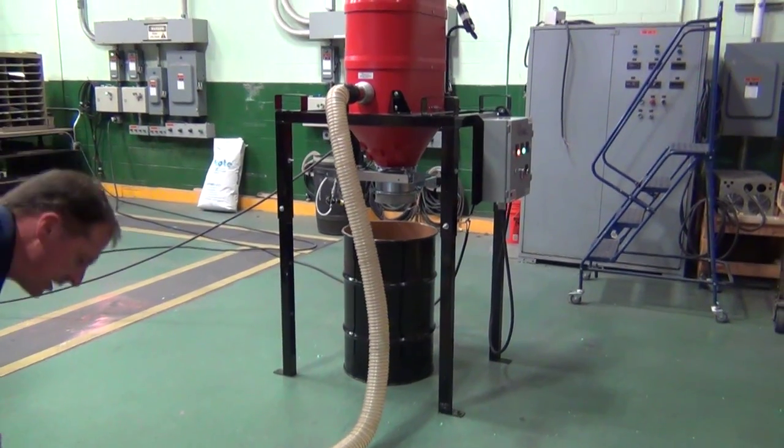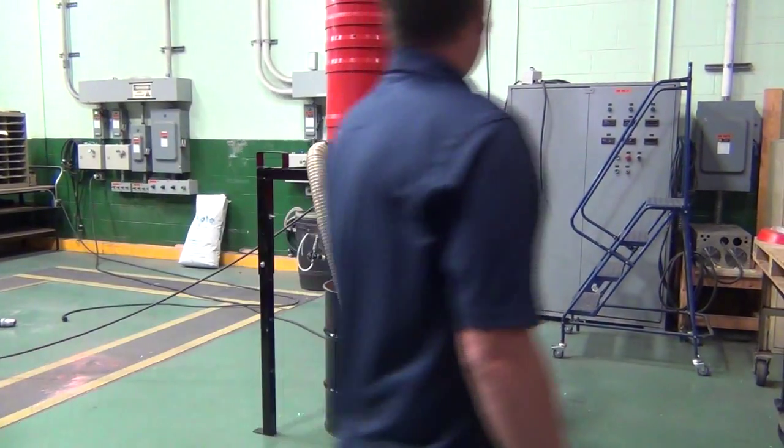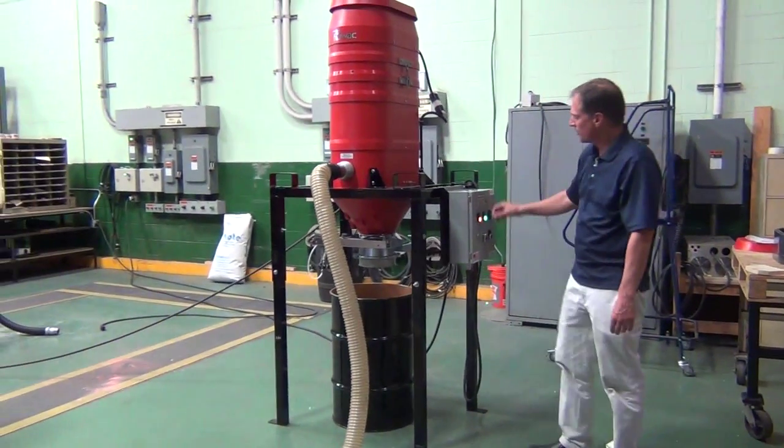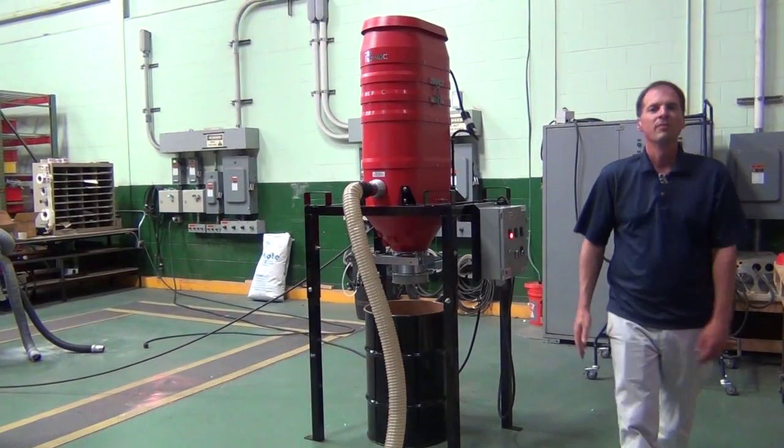So this is a review of the Ruvok SV3 silo, the HD model that produces 11 inches of mercury.